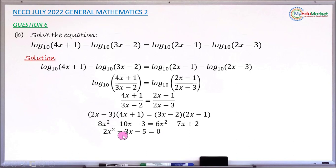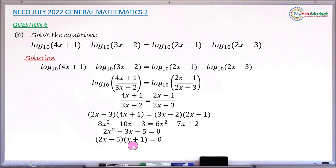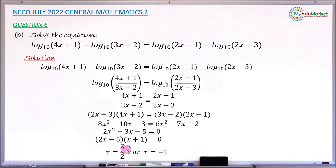This is a quadratic equation that we need to solve to find x. Using the factorization method, the left-hand side factorizes as (2x - 5)(x + 1) = 0. If either bracket equals zero: from the first bracket, x = 5/2; from the second bracket, x = -1. So the solution is x = 5/2 or x = -1.